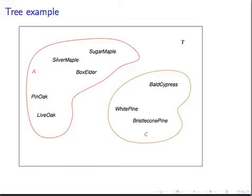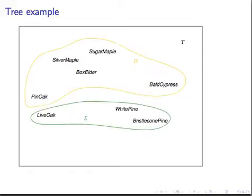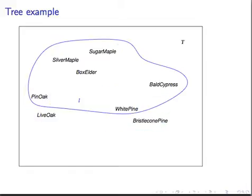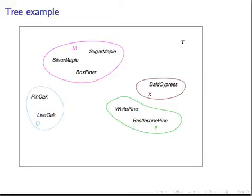angiosperms, also called broadleafs, by deciduous trees versus evergreens, by which species are found naturally in Illinois, or we can categorize them by genus.